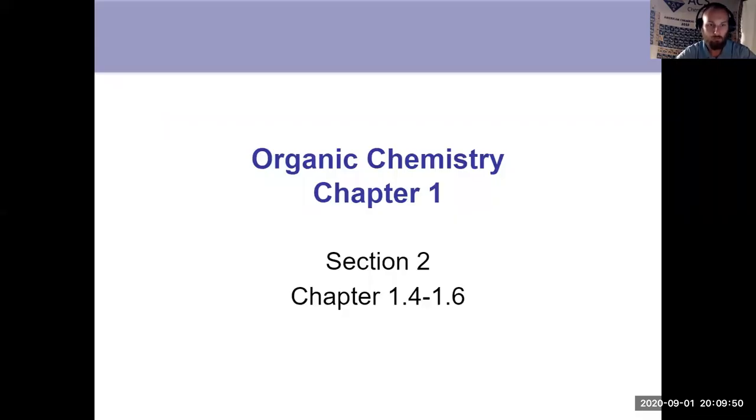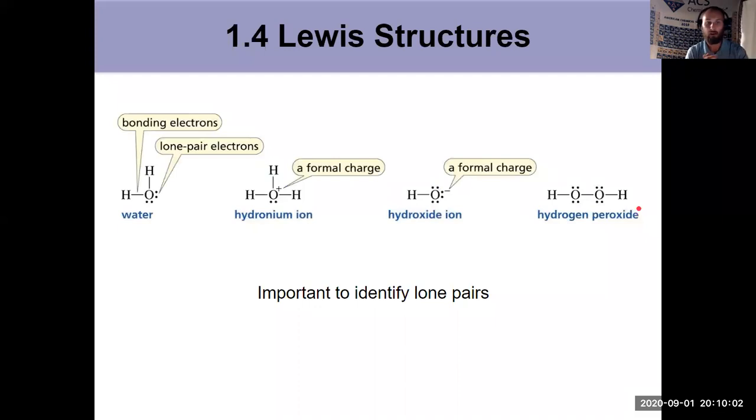Our second section of Chapter 1 will cover subsections 1.4 through 1.6, where we talk first about Lewis structures and then some principles of bonding, including discussion about orbitals. Lewis structures are something we've been using for a long time, even in general chemistry. If you can't do a Lewis structure at this point, you better get crystal clear on those principles sooner rather than later, because we will be using Lewis structures and other types of structures all the time.